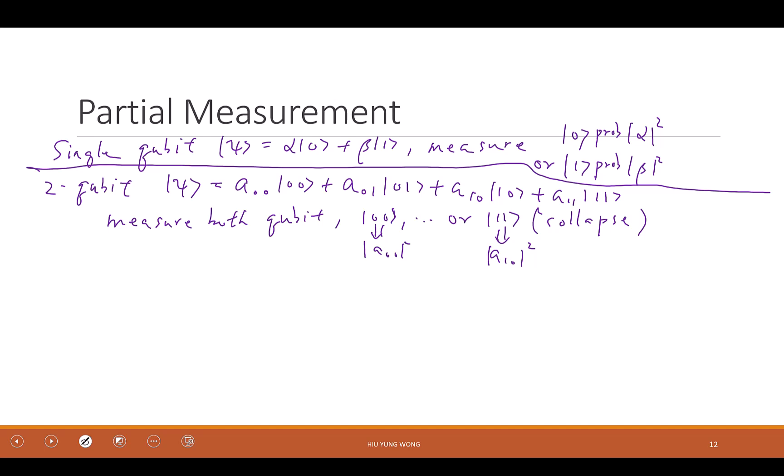Now, what if I don't measure both of them? I only measure, let's say the first qubit. I have the liberty to do that. I have two electrons. I just measure one. What are the possibilities? Well, the first qubit can collapse to either 0 or 1, because I only measure one of them.